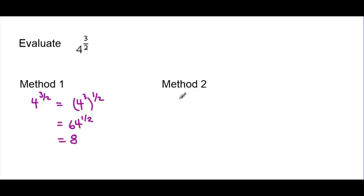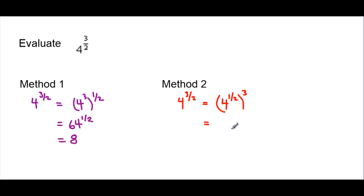Here's another way to look at it. Again, write 4 to the exponent 3/2, but this time keep the 4 with an exponent of 1/2, then put that power to the exponent 3. This works because 1/2 times 3 is 3/2. Well, 4 to the exponent 1/2 is the square root of 4, which is 2. So this is 2 cubed — 2 times 2 times 2 — which is 8. Both methods give us the same answer, and both involve taking an nth root (determined by the denominator) and then applying an exponent (determined by the numerator).